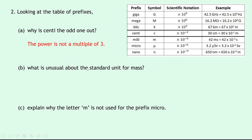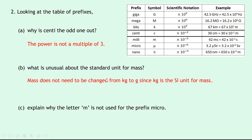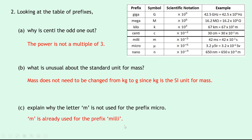Part b: what is unusual about the standard unit for mass? Remember that mass does not need to be changed from kilograms to grams, since kilograms is the SI unit for mass. And lastly, part c: explain why the letter m is not used for the prefix micro. Micro uses mu, and milli already uses small m, so m is already taken up by the prefix milli.